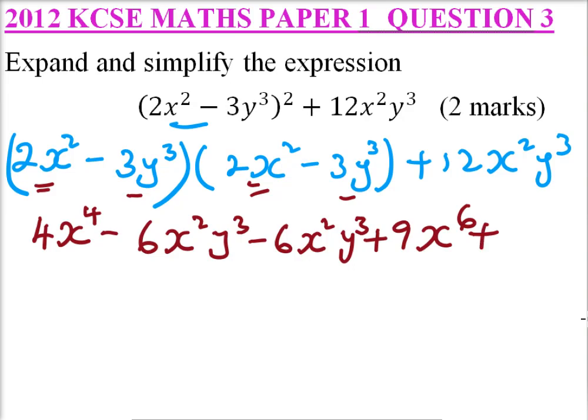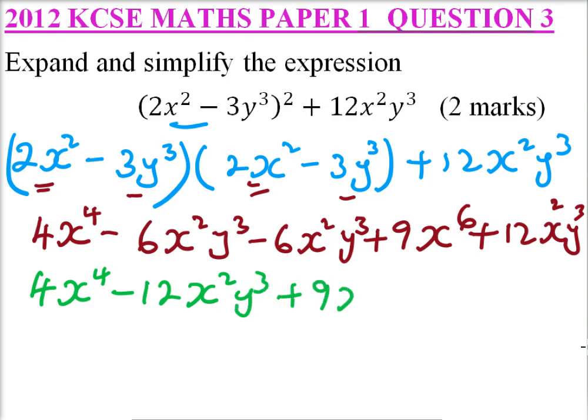And then we add 12x squared y cubed. So we put the like terms together. We have 4x to power 4. So this will be minus 6x squared y cubed minus 6x squared y cubed. That will give you minus 12x squared y cubed. Then plus 9y to power 6. Then plus 12x squared y cubed.